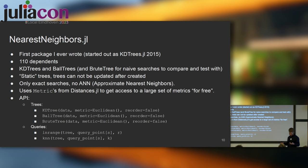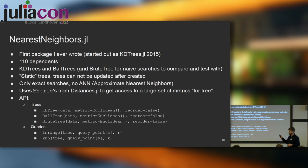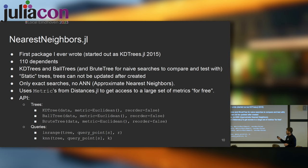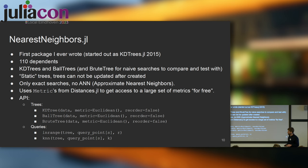Now I want to talk specifically about the NearestNeighbors.jl package. It's a bit special to me because it was the first Julia package I ever wrote — it started as KDTrees.jl in 2015, then I added the ball tree and other things, so it became NearestNeighbors. It now has 110 dependent packages. It includes a KD tree, ball tree, and a brute-force tree useful for checking correctness and performance. The trees are static — you create them once with all input points and cannot update incrementally. It only provides exact searches and uses the Distances.jl package for a large set of metrics.